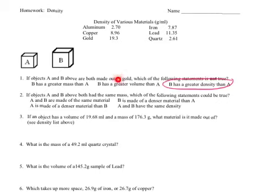And the reason this is true is they're both made out of gold, and gold always has a density of 19.3 grams per milliliter. Since A and B are both made of the same material, having more of B means it has to have a greater mass than A.